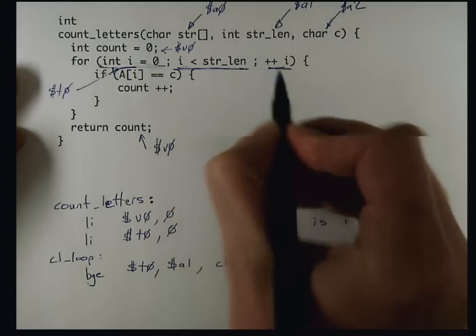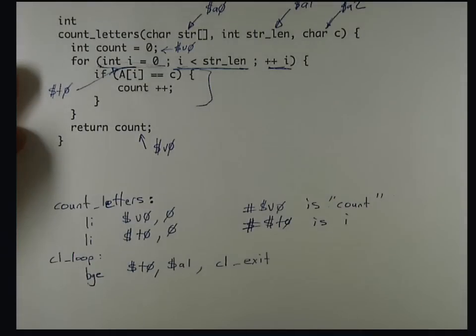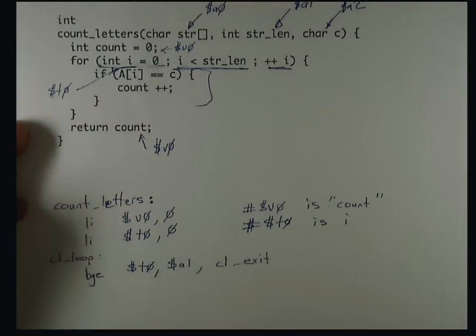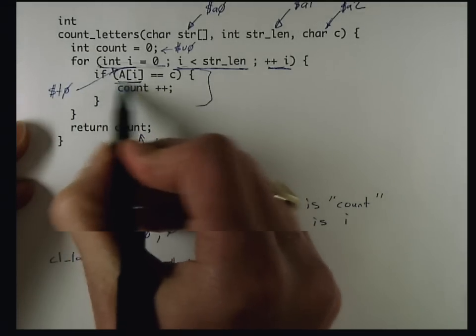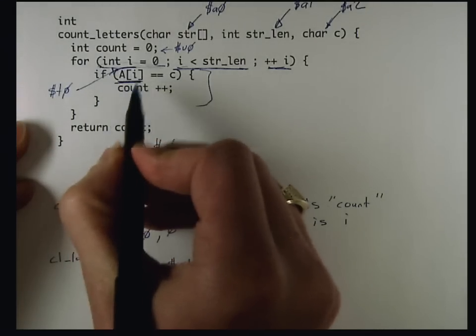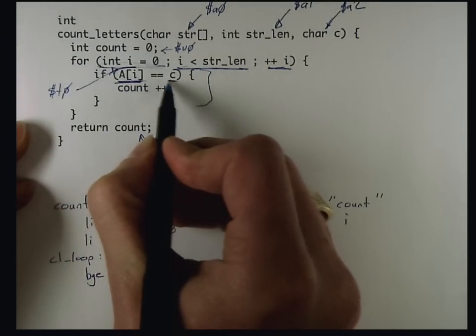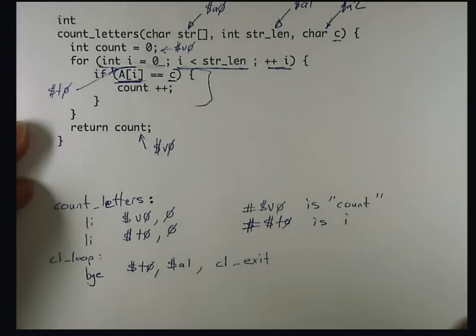I handle this at the end of the loop, so I'm ready to go on into the body of the loop, which is this if statement. To do that, I have to load the current element of the array and compare it to C, which is one of the arguments passed in.